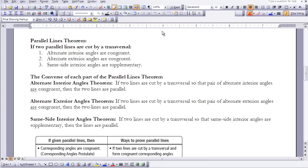We have a parallel lines theorem that says if two parallel lines are cut by a transversal, then alternate interior angles, alternate exterior angles are congruent, and the same side interior angles are supplementary.